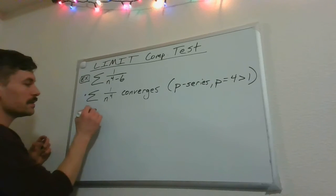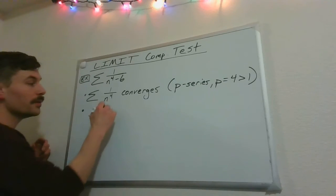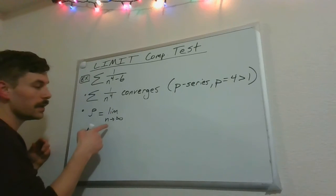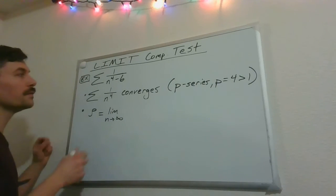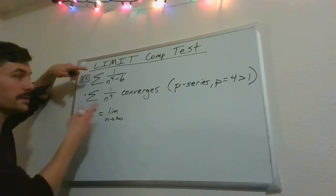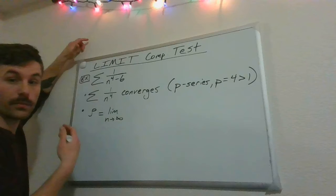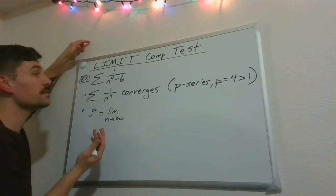So that says to let rho equal the limit as n goes to infinity of the ratio of these two. Now, it doesn't matter. This is the nice thing. The order on these doesn't matter. So put them in an order that works to your advantage, right?